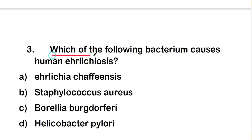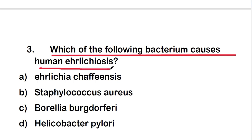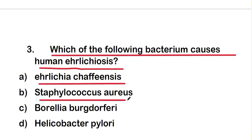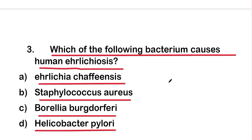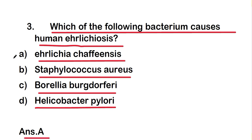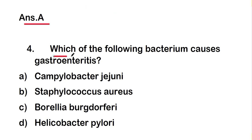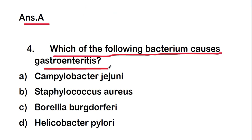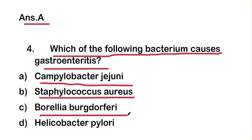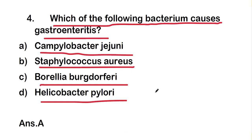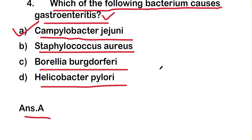The next question is: which of the following bacterium causes human ehrlichiosis? The options are Ehrlichia chaffeensis, Staphylococcus aureus, Borrelia burgdorferi, or Helicobacter pylori. The right answer is option A — Ehrlichia chaffeensis. The following question involves Campylobacter jejuni, which is the bacterium that causes gastroenteritis.